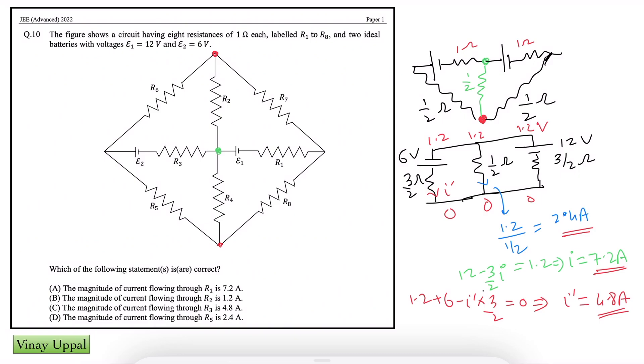All right. So these three branches, now we just have to look at each resistance which we are asked in the options. How much is the current in the resistance? First of all, let's say, what are we asked in option A? Current in R1. Now, where is R1? R1 is connected to the battery E1, R1 is connected to 12V. So how much is the current in 12V battery? We already found that out as 7.2. So option A is correct.